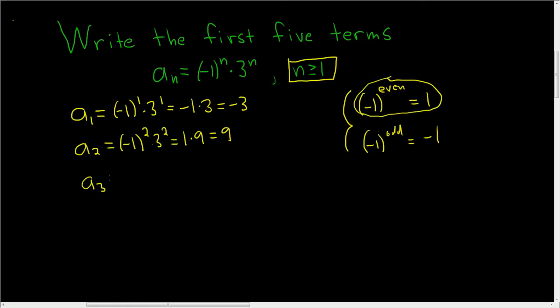A sub 3, this is negative 1 cubed times 3 cubed. So negative 1 cubed is negative 1 and 3 cubed is 27. So we end up with negative 27.